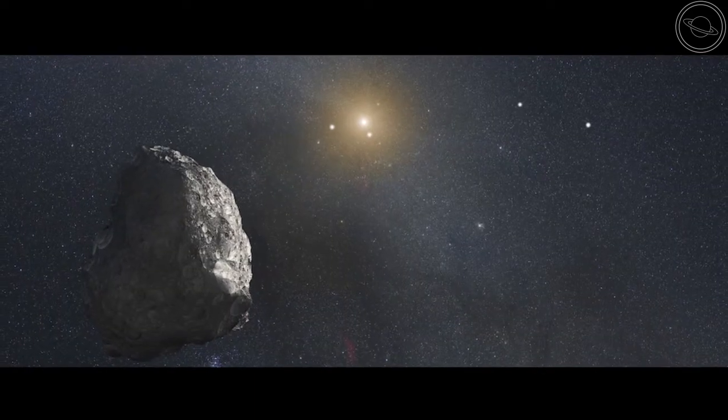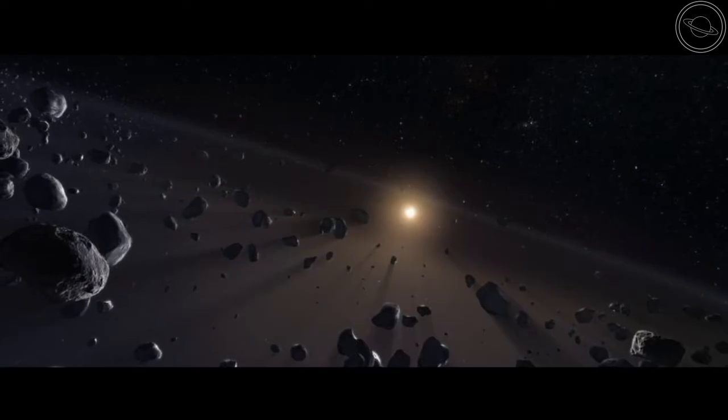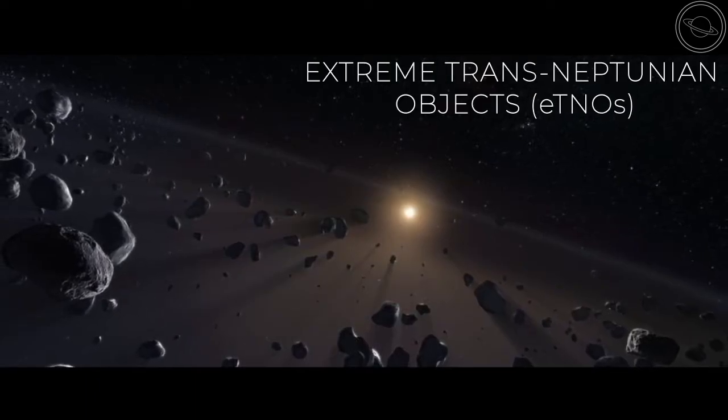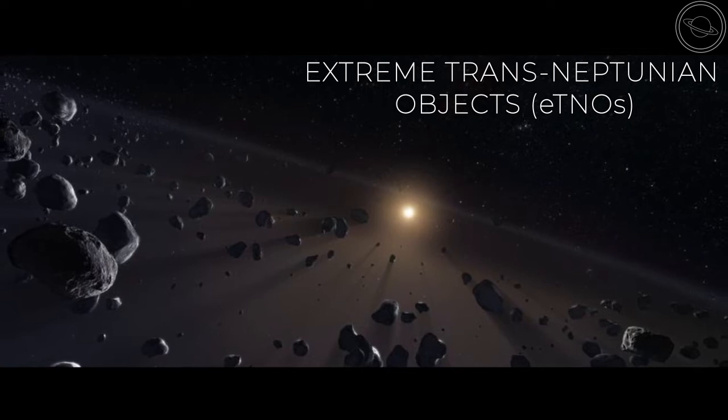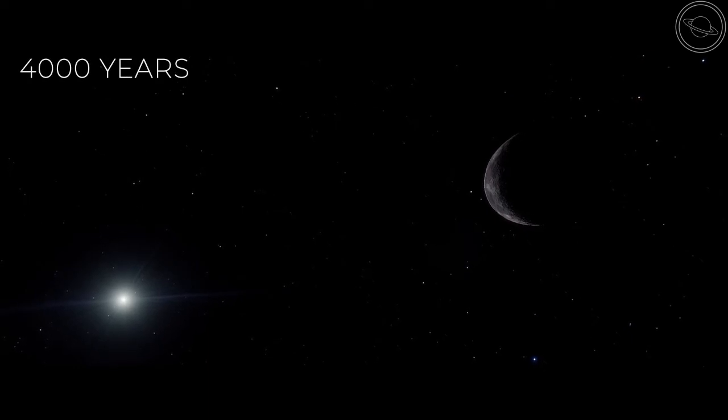Recently, scientists found something strange in the Kuiper belt. Six small objects, known as extreme trans-Neptunian objects, or ETNOs, could hold the key to finding Planet 9. These objects are ridiculously far out, and take around 4000 years to orbit the sun.